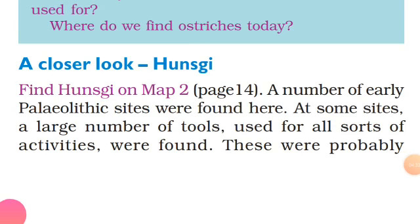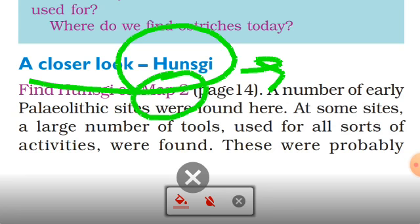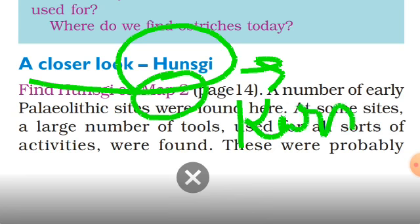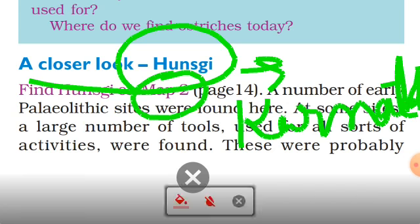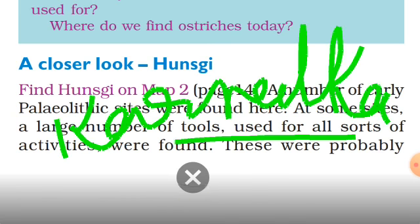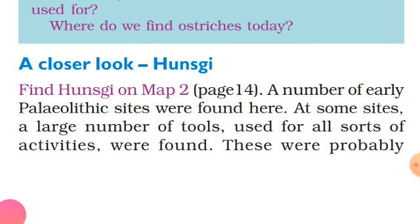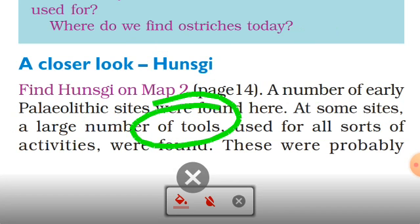A closer look — Hunsgi. Hunsgi is in Karnataka. You can see this on the map too. A number of early Paleolithic sites were found here. That is very important. A large number of tools were found here. You can go to any history museum and watch or look at any kind of tools from this period.